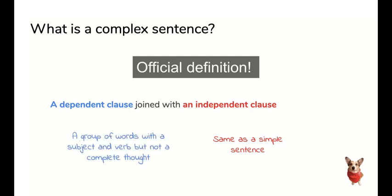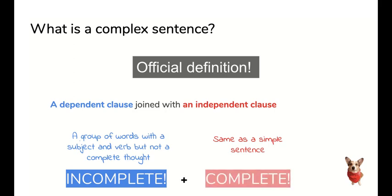A dependent clause is very similar but it cannot stand alone because while it is a group of words with a subject and a verb, it does not have a complete thought to it. And you'll see this very clearly in a minute when I show you. So a dependent clause is incomplete. Therefore it cannot stand alone. An independent clause is complete. If you put them together it counts as a complete sentence.